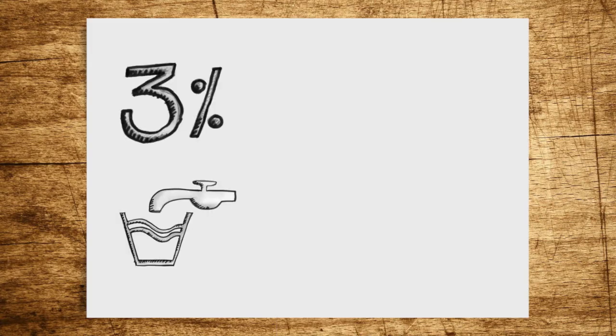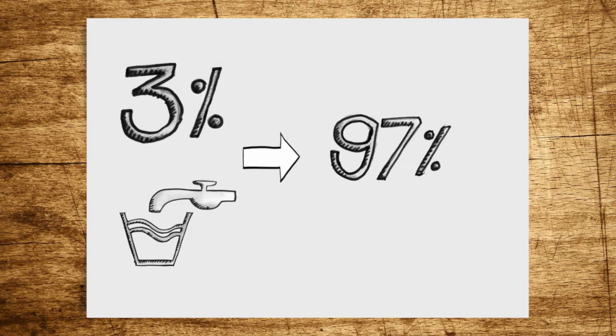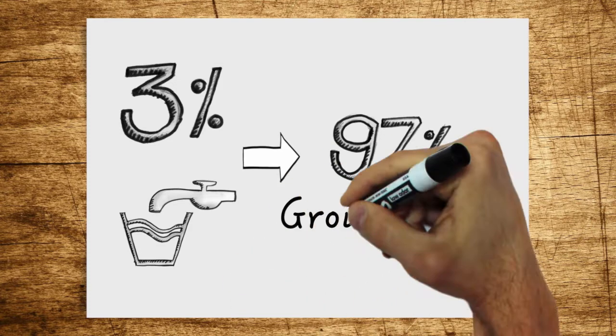Apart from the poles and glaciers, most of this fresh water is not visible to us. About 97 percent of the usable water is groundwater.